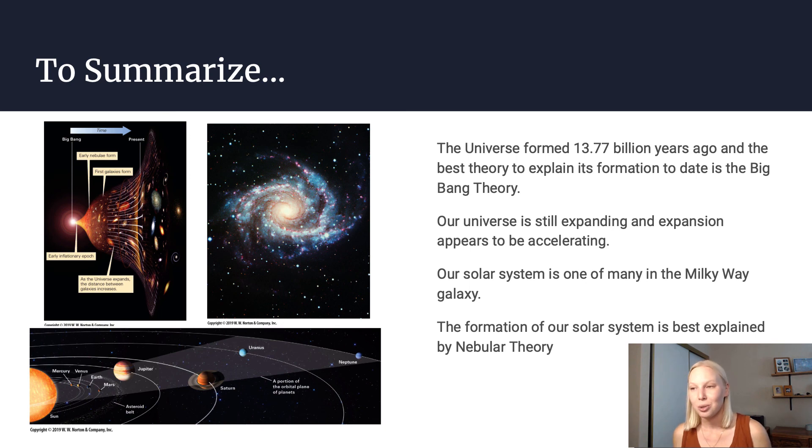And the formation of our solar system, if you look at that smaller scale of the solar system, that is best explained by nebular theory—going from that amorphous cloud of dust and gas, and then gravity causing those particles to cling to one another and eventually form our eight planets.